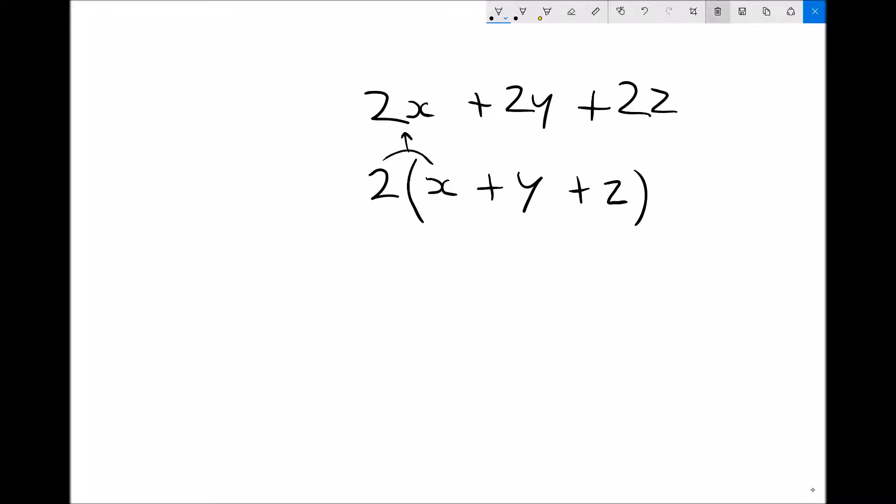We'll do a couple more of these. Let's say we had something along the lines of 6x plus 3y plus 9z. Well what we need to do is inspect the coefficients of x, y, and z, and we're looking for the highest common multiple. Well from inspection, hopefully you can see that the highest common multiple in this case is 3.